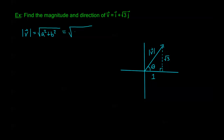Here A is 1, so I have 1 squared, and B is √3, so I have (√3)², giving √(1 + 3) = √4 = 2. So my magnitude is 2 — that's half the problem done. Now I need to find the direction, which is the angle theta between the positive x-axis and the vector drawn with its vertex at the origin. We can use tangent of theta equals B over A, as long as A is not equal to 0.